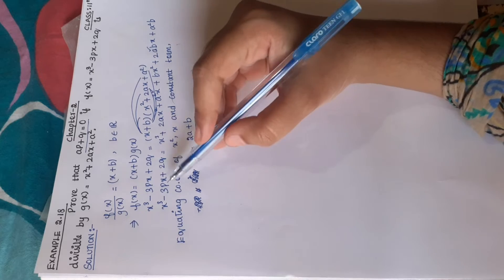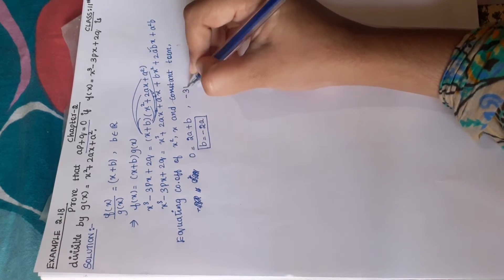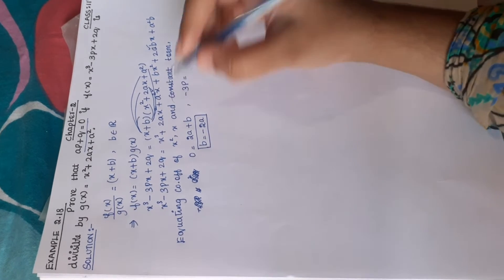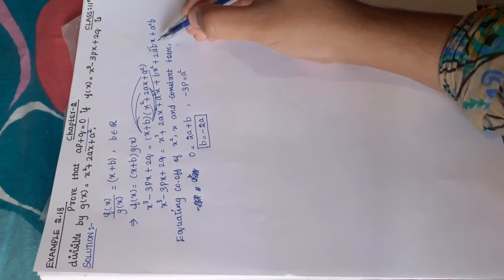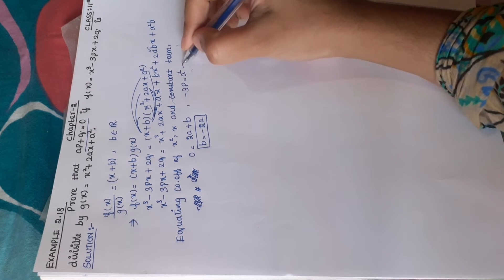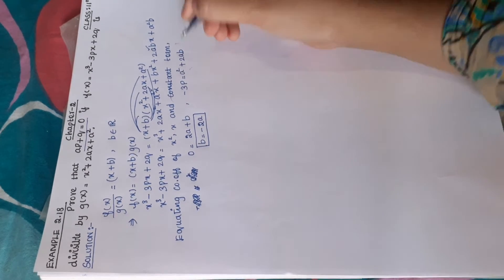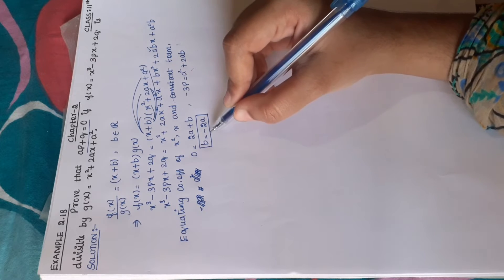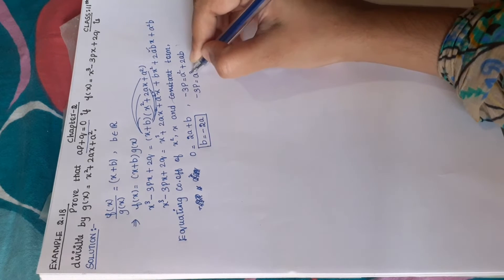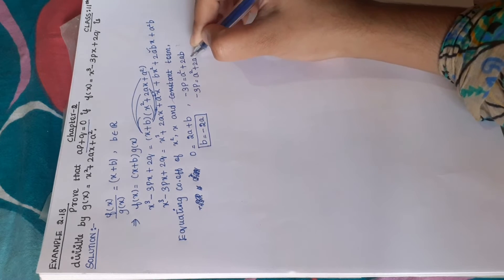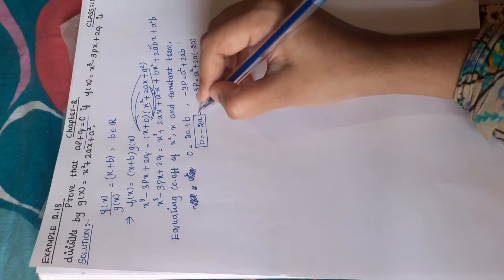Now equating the x term: the x coefficient on the left-hand side is minus 3p. The x term on the right-hand side is a square plus 2ab. So minus 3p equals a square plus 2ab. Substituting b equals minus 2a from equation 1.